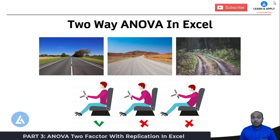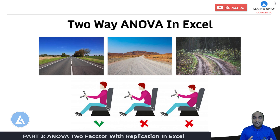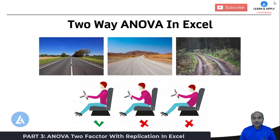Hello friends, welcome back. As you know from the last two videos, we have started learning data analysis in Excel. In the first video we saw how to set up the data analysis option in Microsoft Excel, and in the second video we saw one-way ANOVA with a practical example, including how to use a box plot to represent results graphically. As a continuation, we are going to learn how to perform two-way ANOVA in Microsoft Excel.